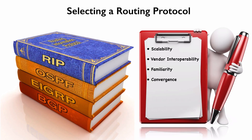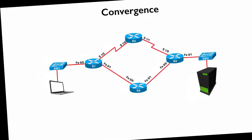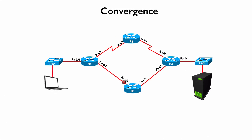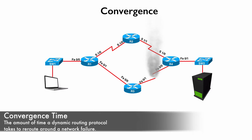Enterprise networking design is also concerned with convergence. Imagine we have a network where a laptop is trying to reach a server, and the primary path is over a fast Ethernet path — the bottom path from router R1 to R3 to R4. If the link between R3 and R4 goes bad and we're running a dynamic routing protocol, we should be able to reroute around that failure — going from R1 up to R2 and then down to R4. How quickly that rerouting can happen is called the convergence time.